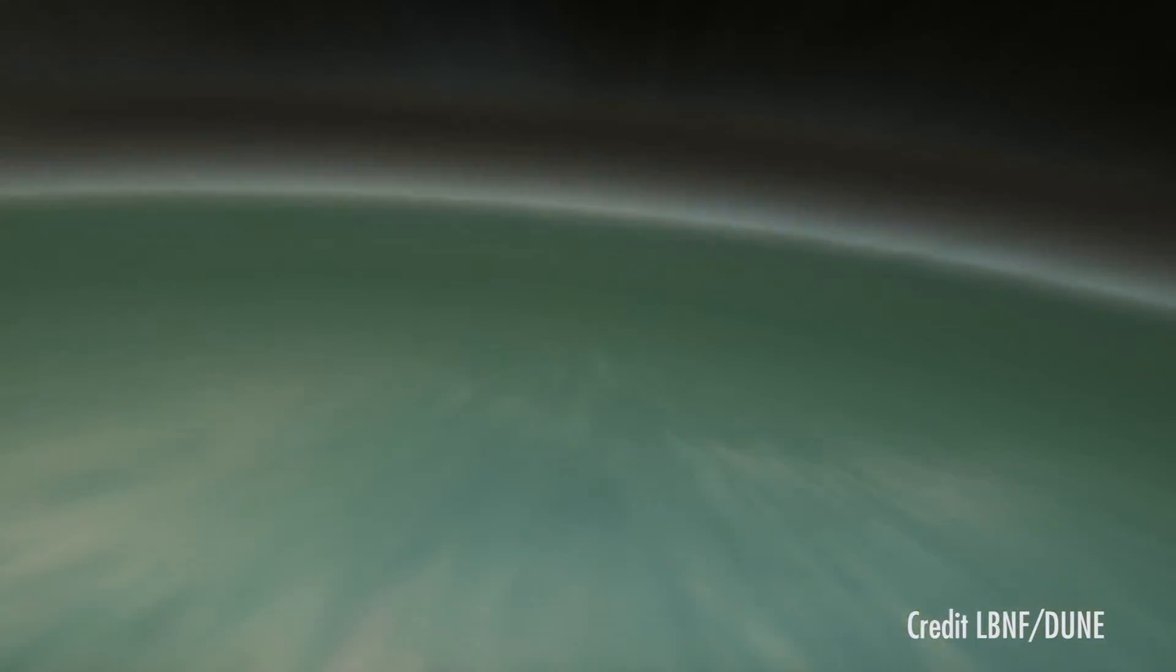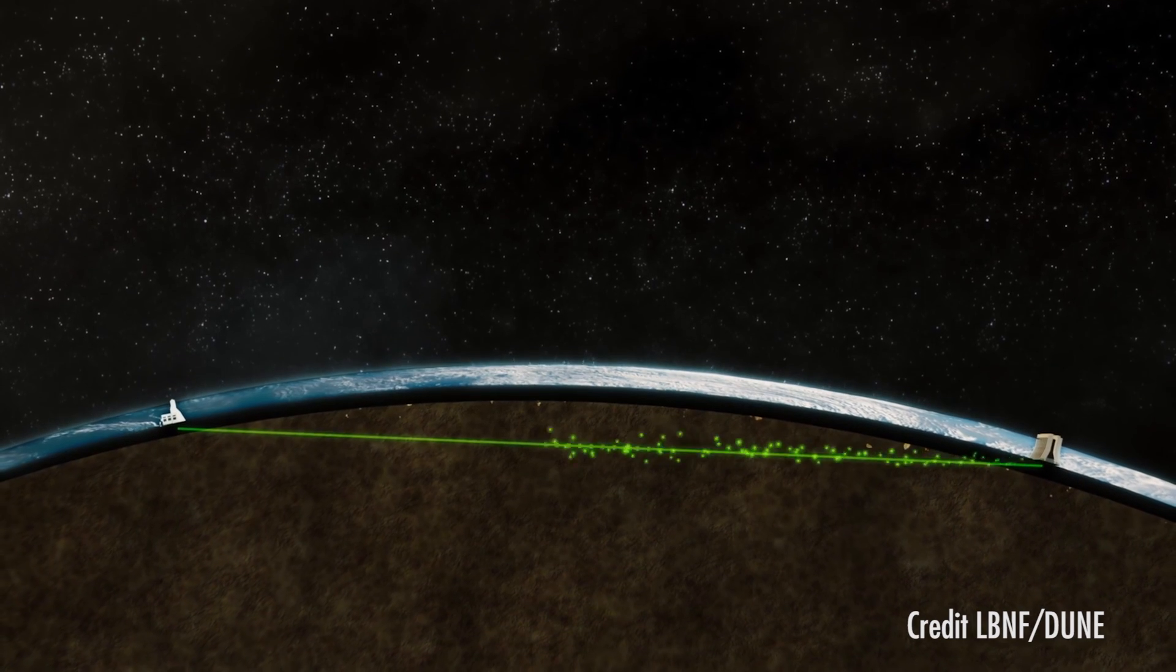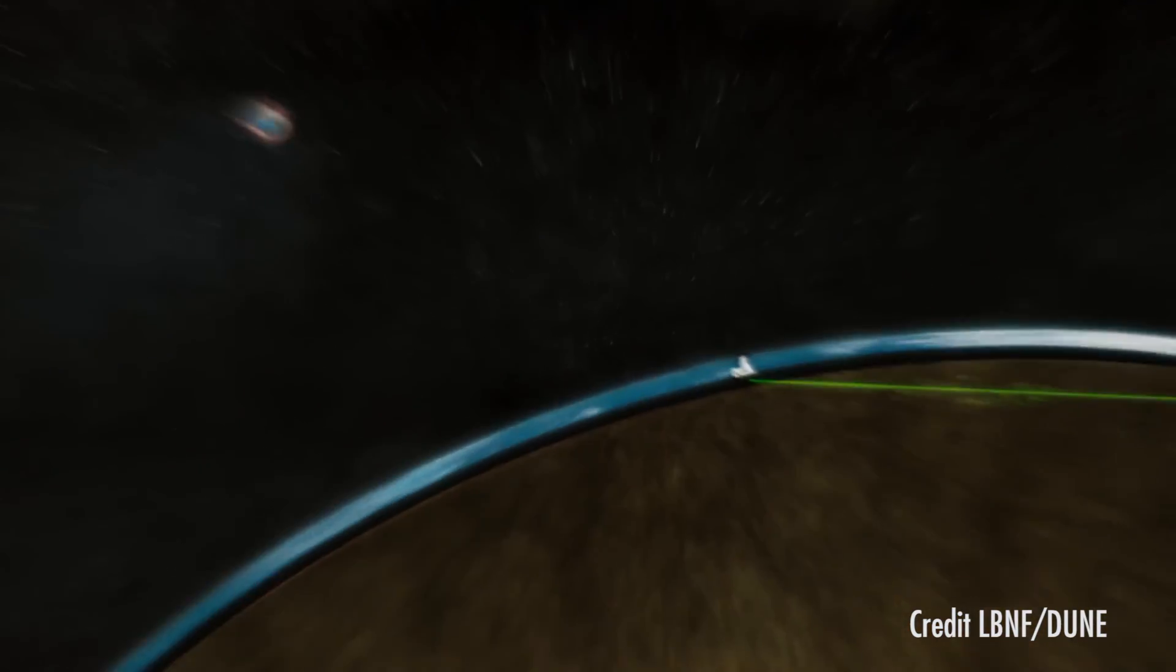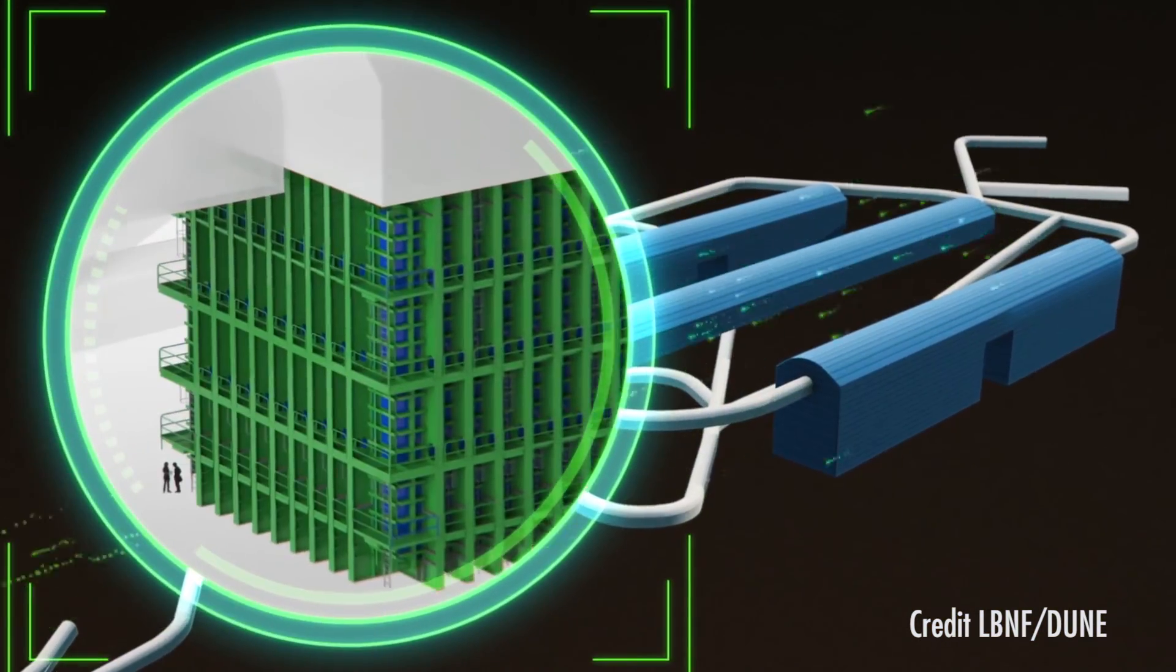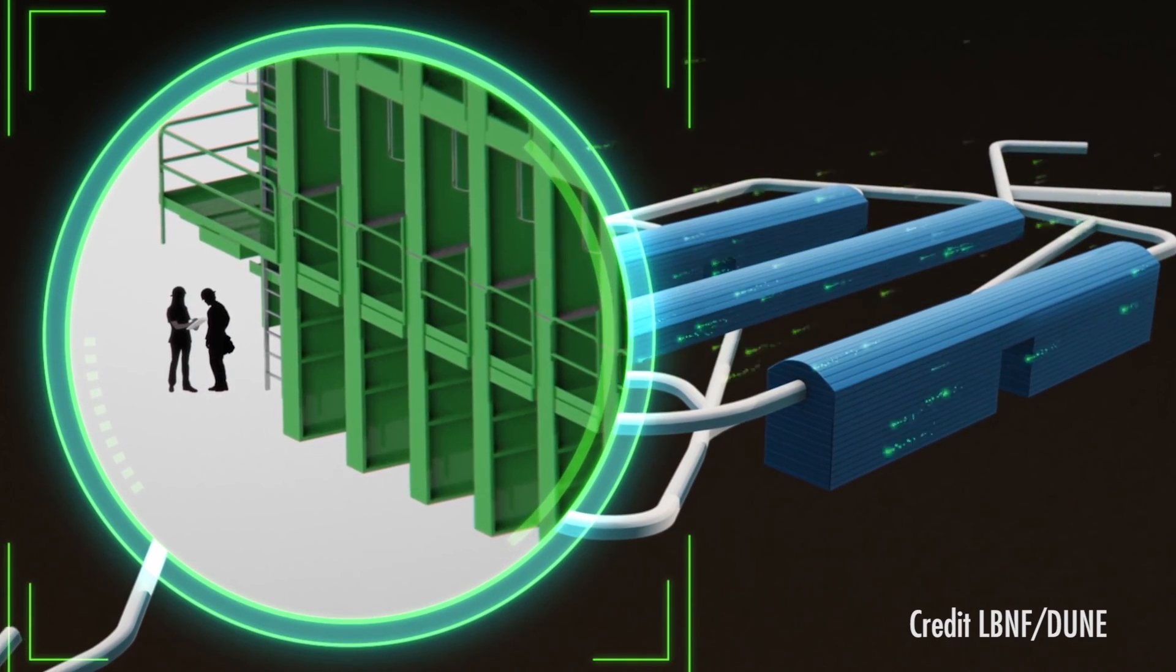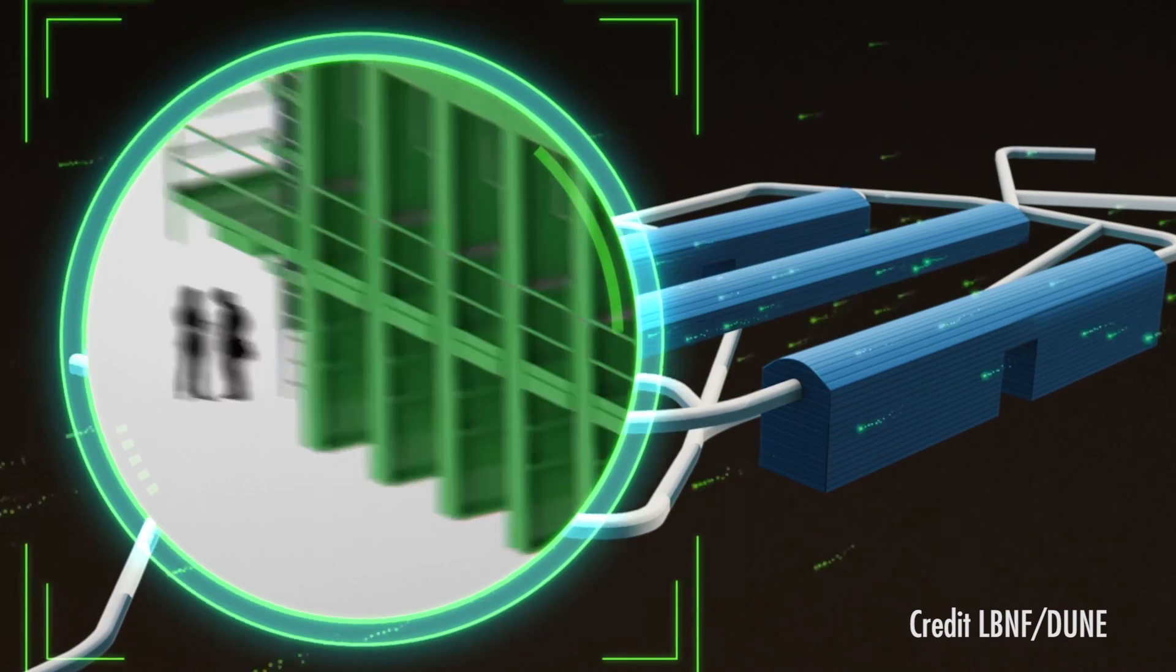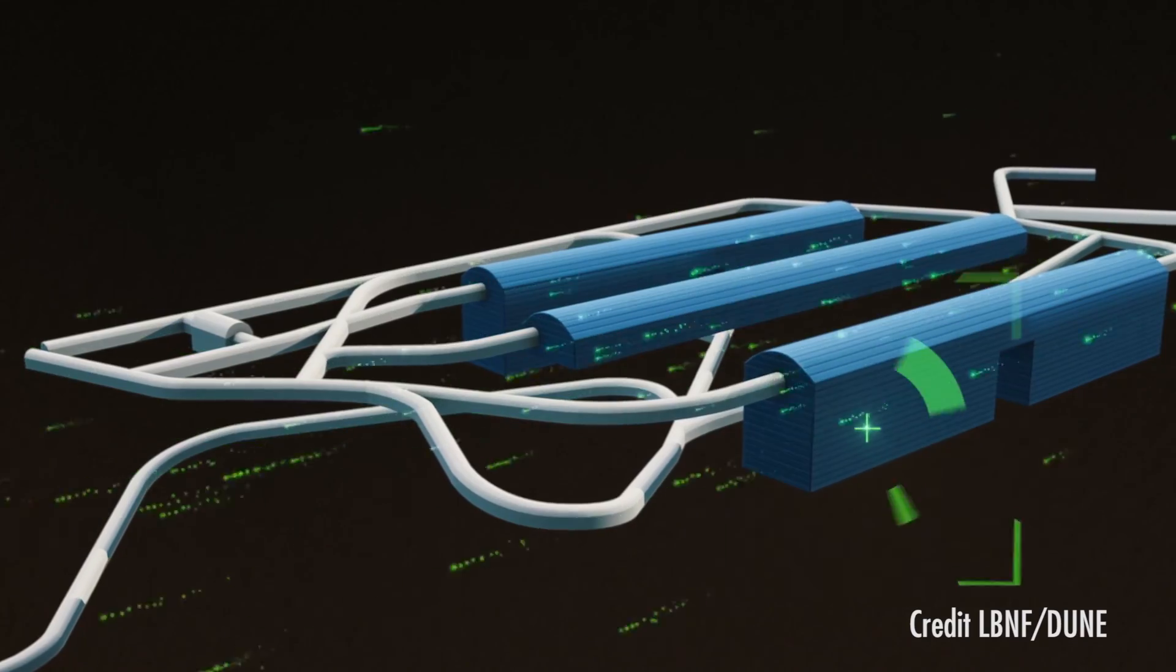If you point your particles in the right direction, in our case South Dakota, then the neutrinos follow that direction. In South Dakota, we're planning to build very large tanks of liquid argon. To give you an idea of the size, each of these detectors is roughly the size of an Olympic swimming pool made six times deeper. We're going to have four of these detectors, and they're not filled with water, they're filled with liquid argon.